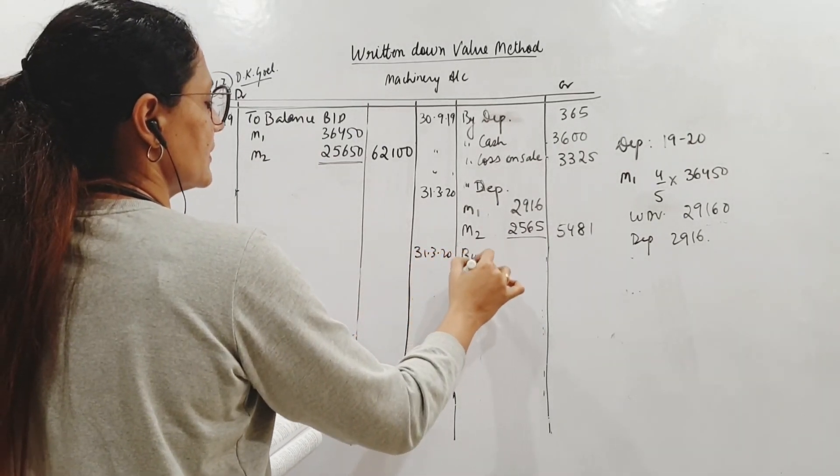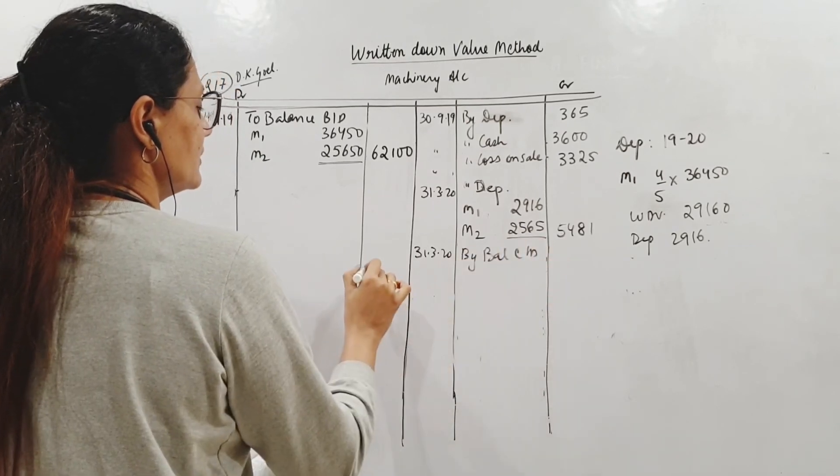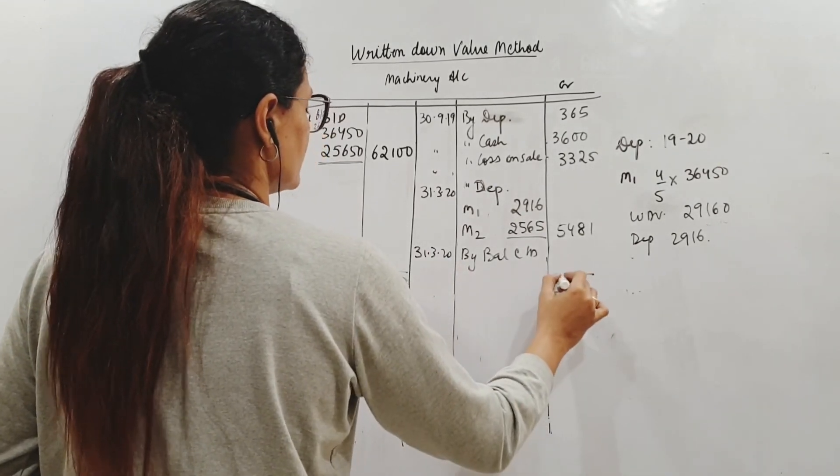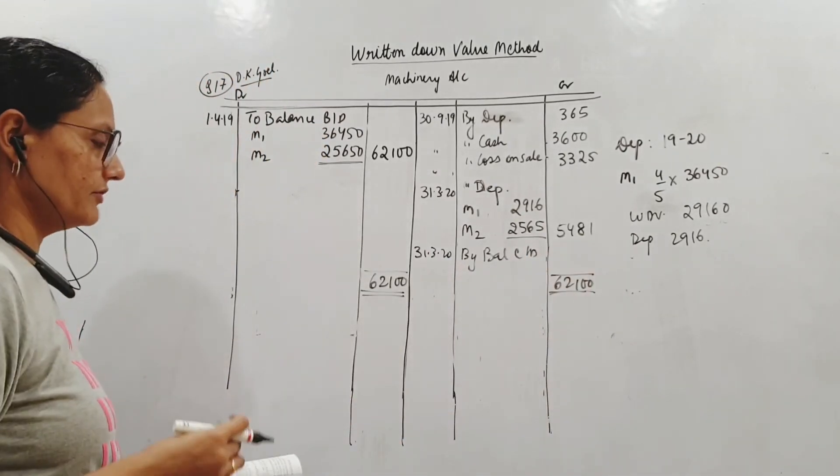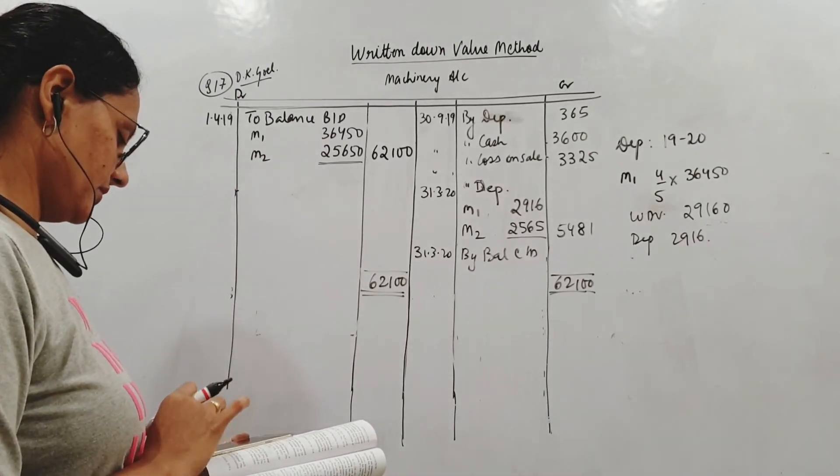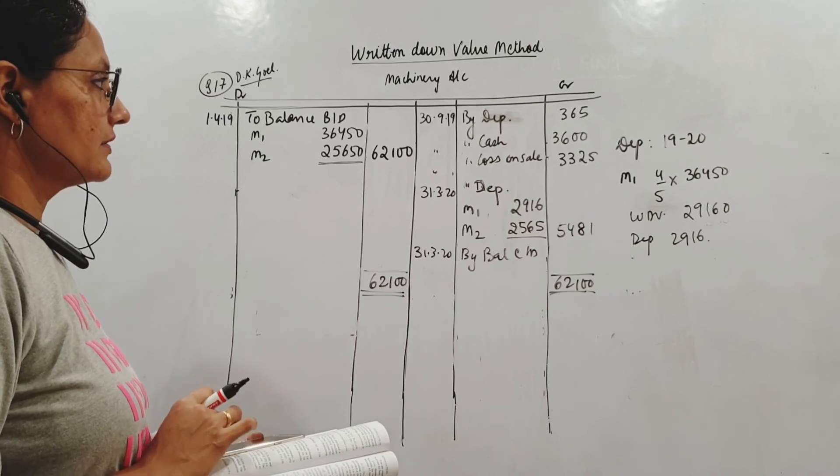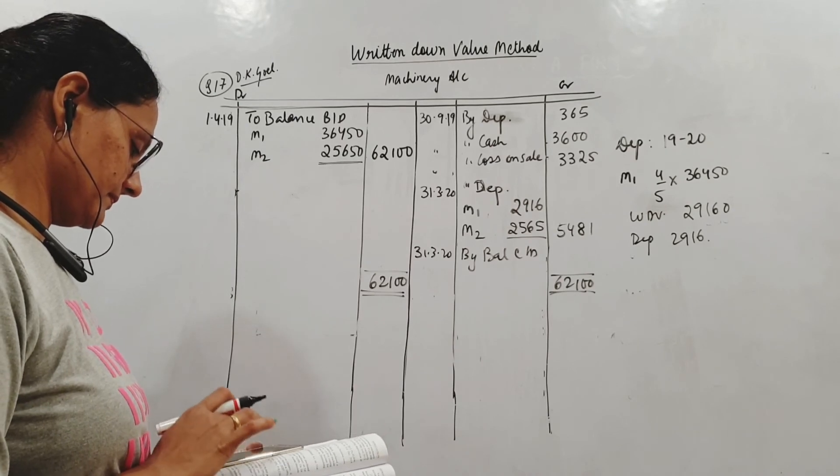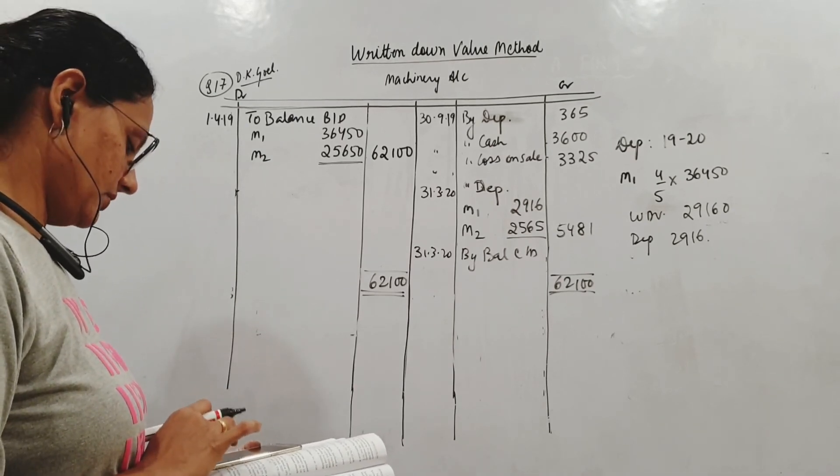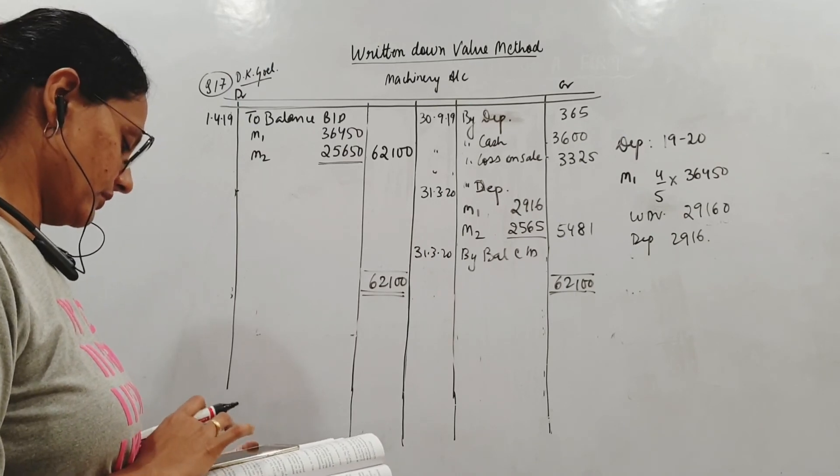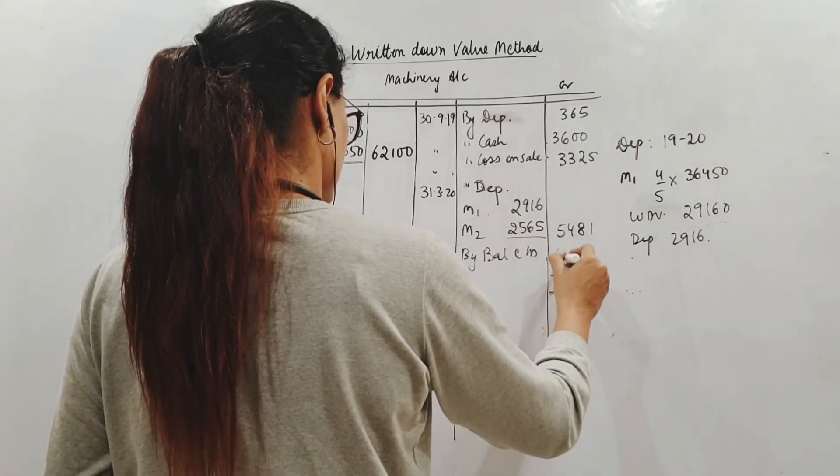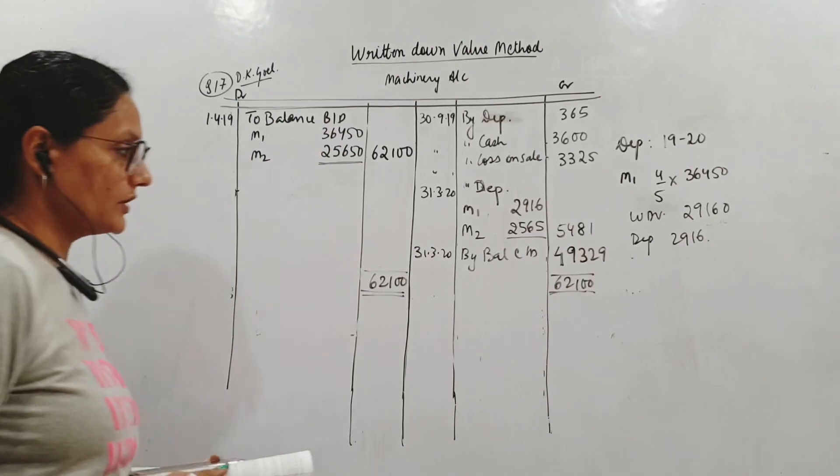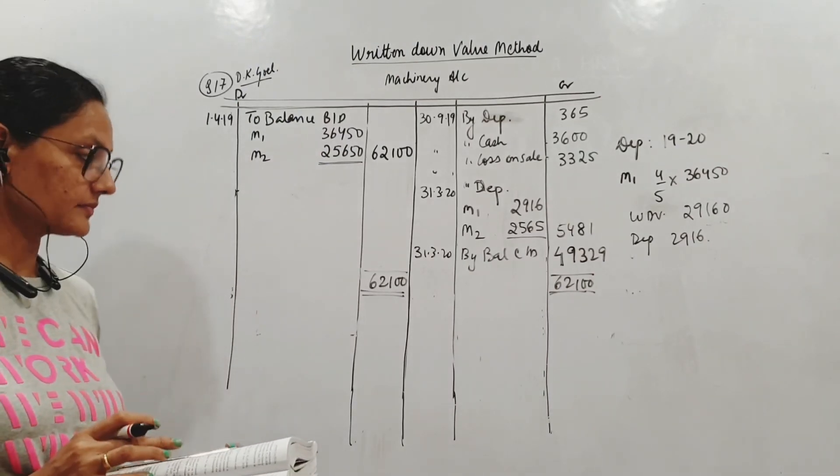Then balance carrying down. By balance carrying down. This is the 4th year, last year. So I am putting all the balance together because I don't need anything after this. So it's 62,100 minus 365 minus 3,600 minus 3,325 and 5,481. This comes to 49,329. So this is what is left. So the same entry. I hope it's clear. Calculation you must show properly. And that's what we do in written down value. That is it.